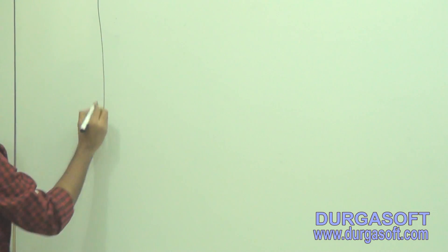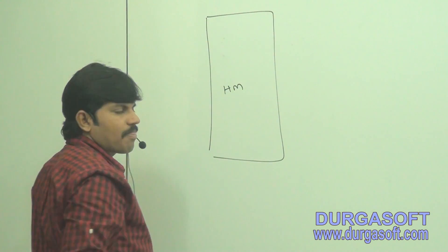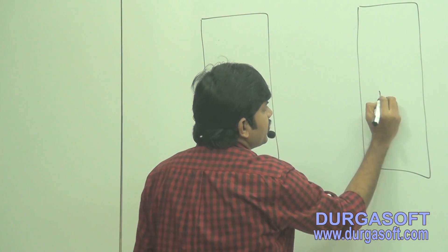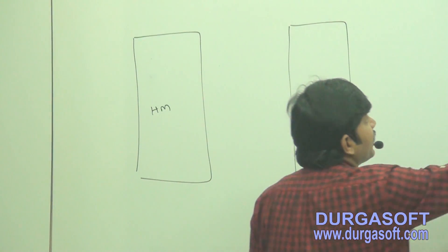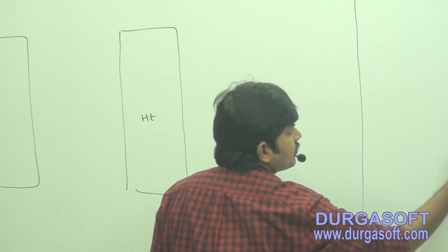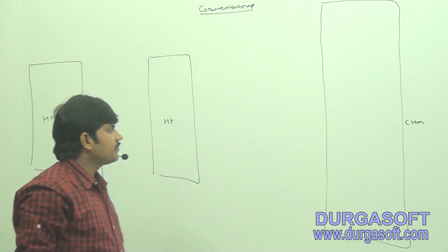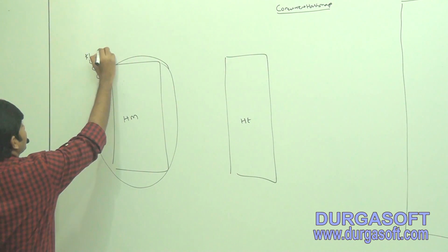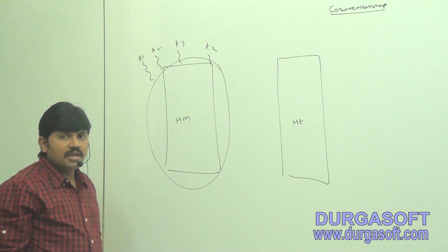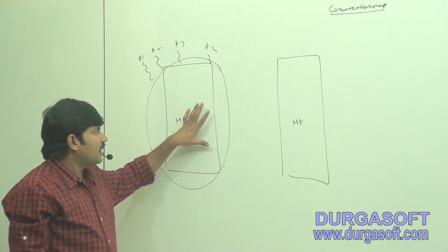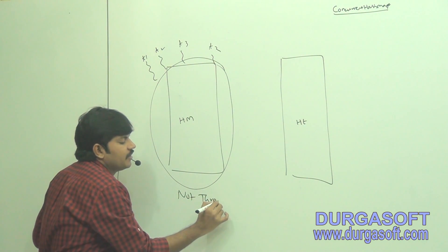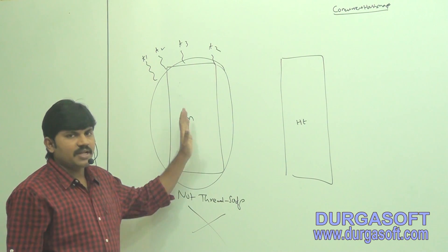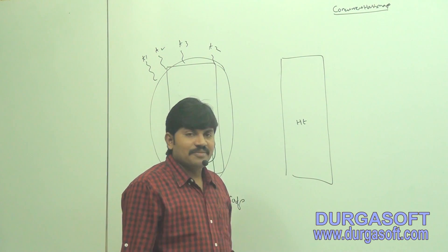HashMap is there, HashTable is there, ConcurrentHashMap is there — what is the difference between all of them? If it is a normal HashMap, just observe: this is HashTable, and the next level is ConcurrentHashMap. On a normal HashMap object, multiple threads are allowed to operate simultaneously, so there may be a chance of data inconsistency problems. That's why normal HashMap is not thread-safe. I want thread safety — is HashTable thread safe?